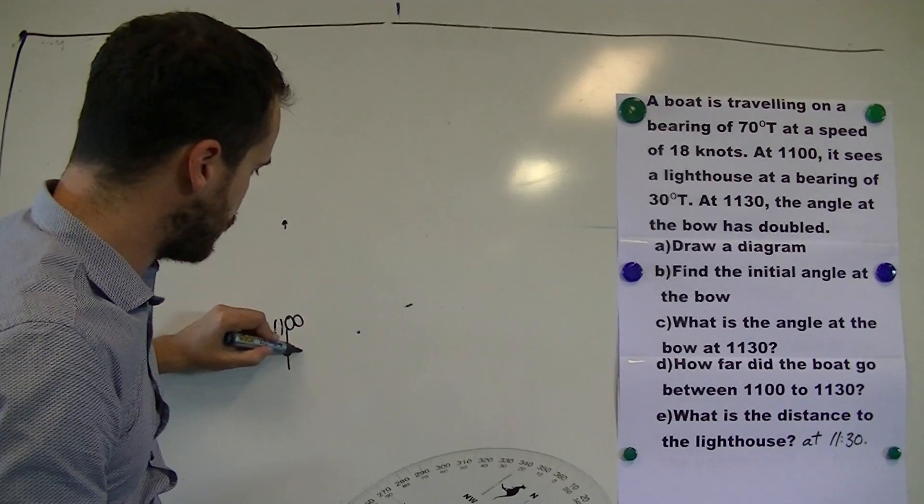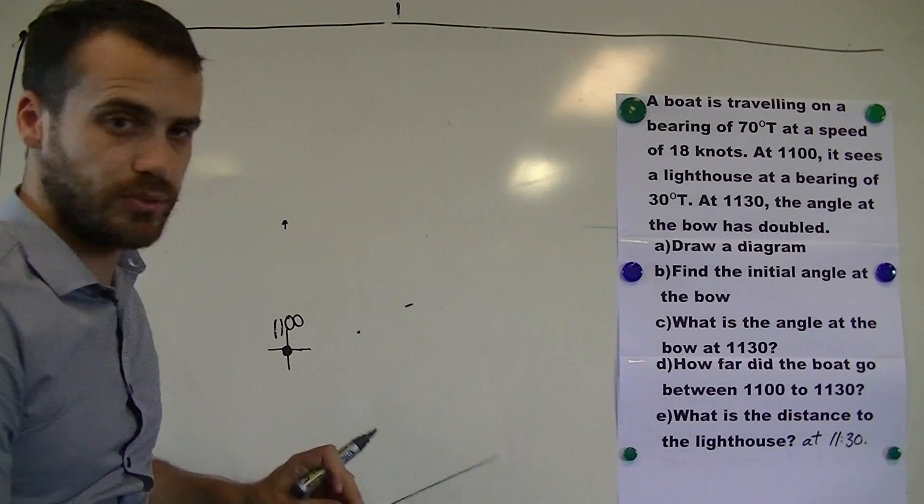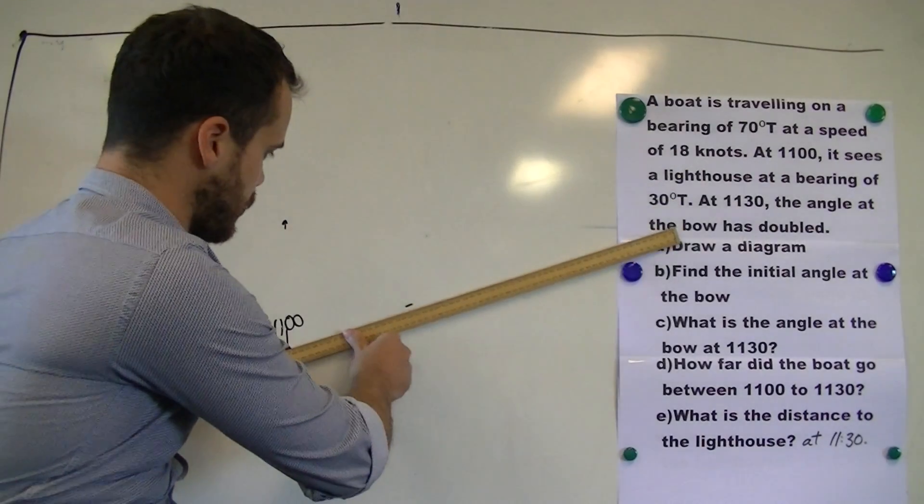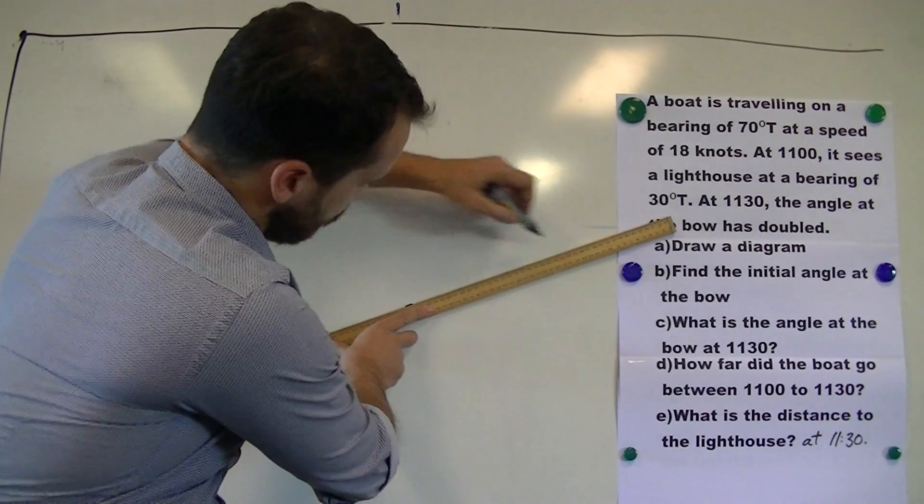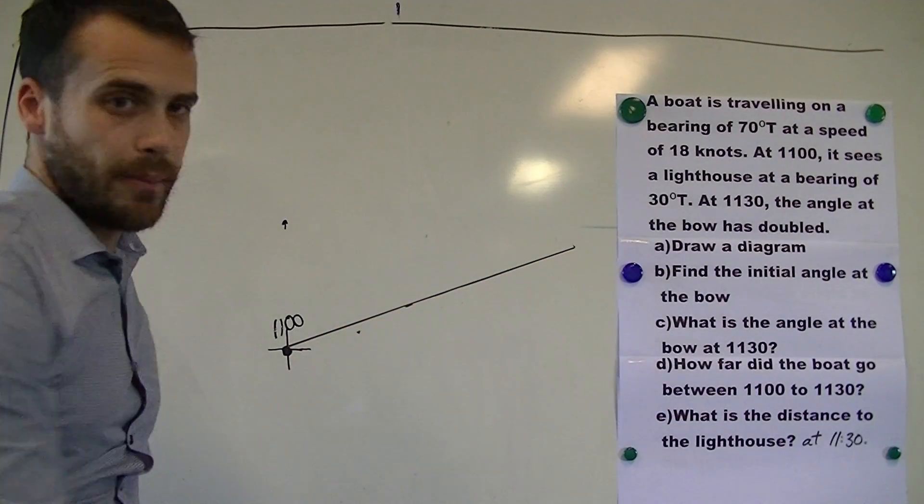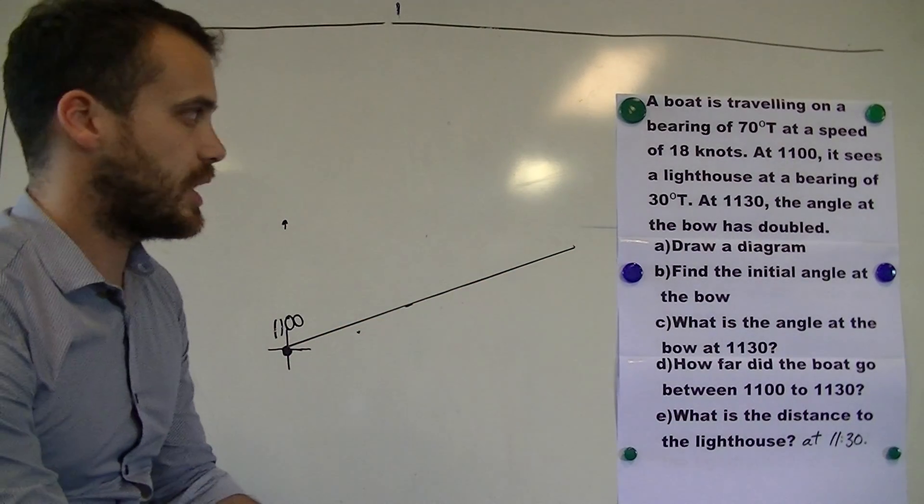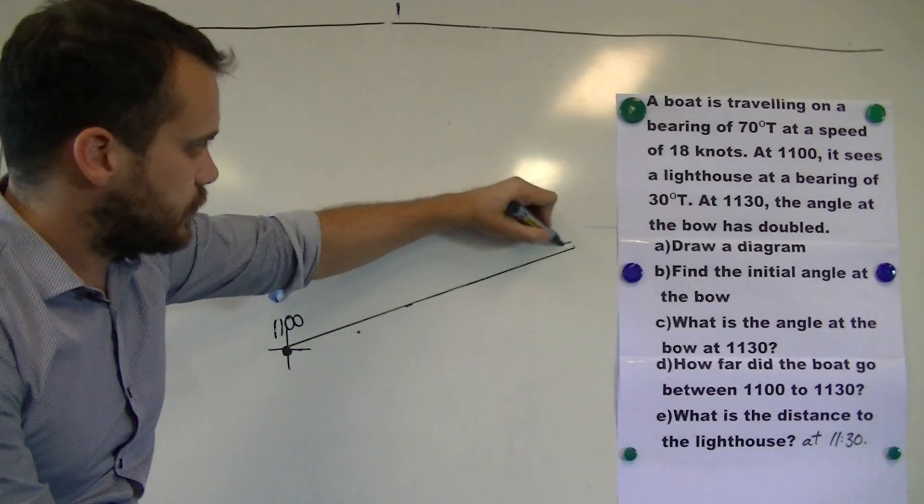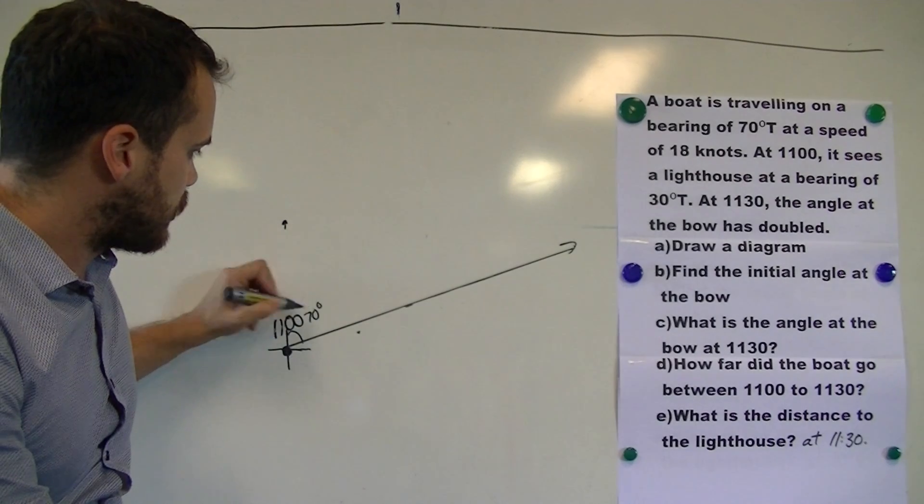It's going to travel along that line. Now I'm going to need to put a compass rose in there so you've got some idea of what's happening. And then draw that line. So our boat's going to travel along that line.